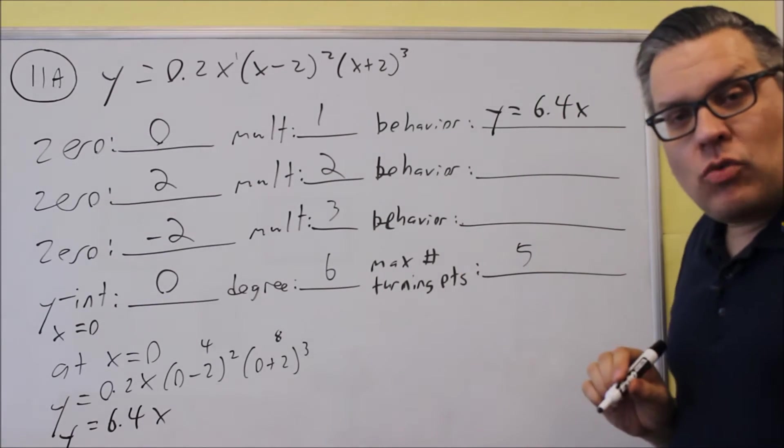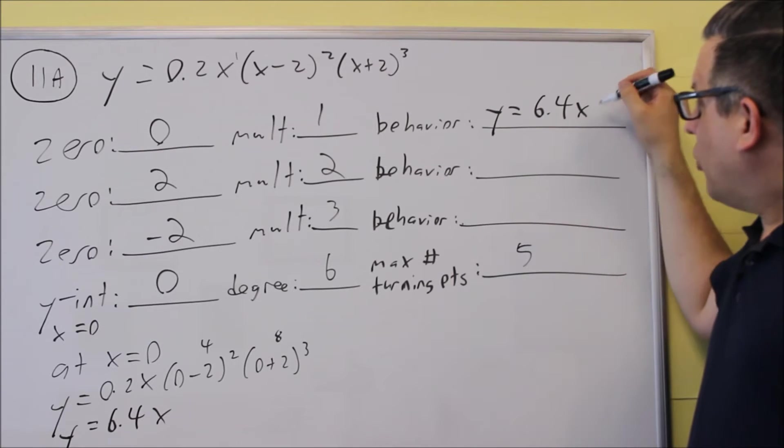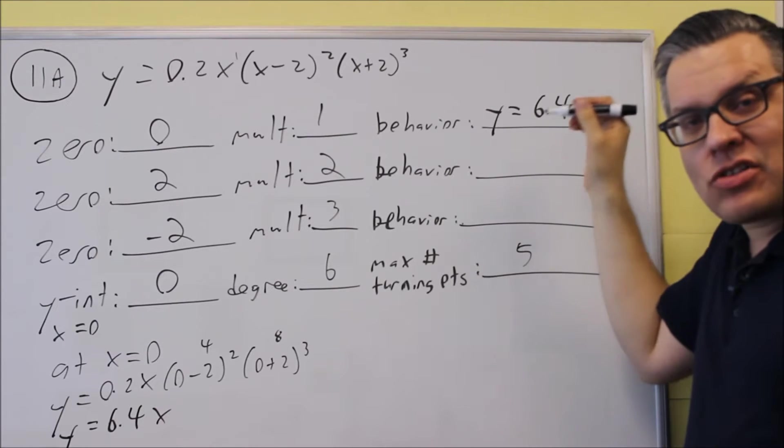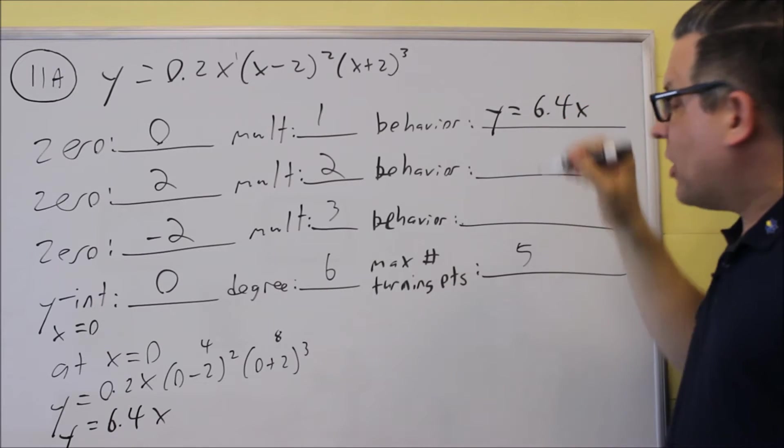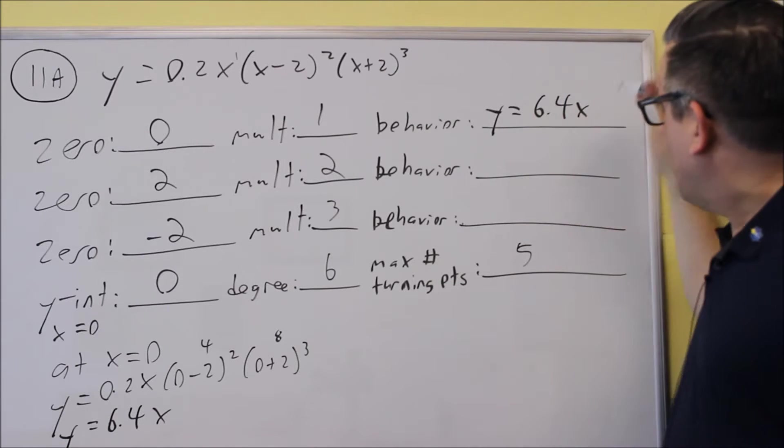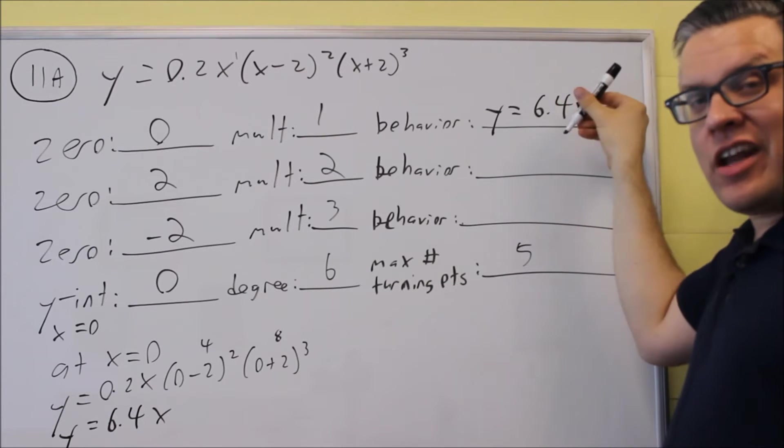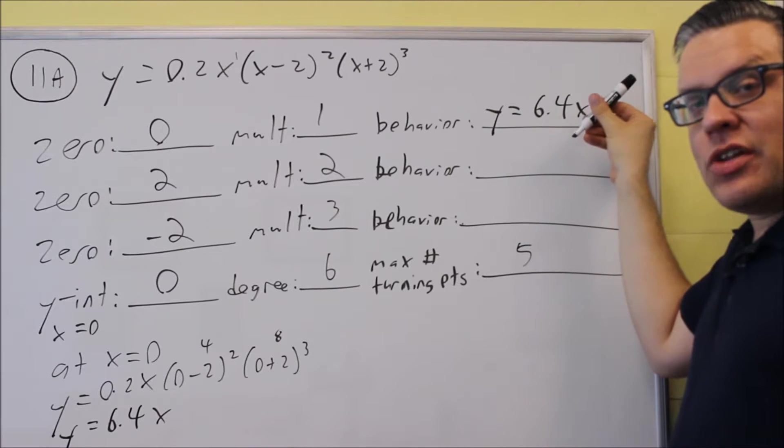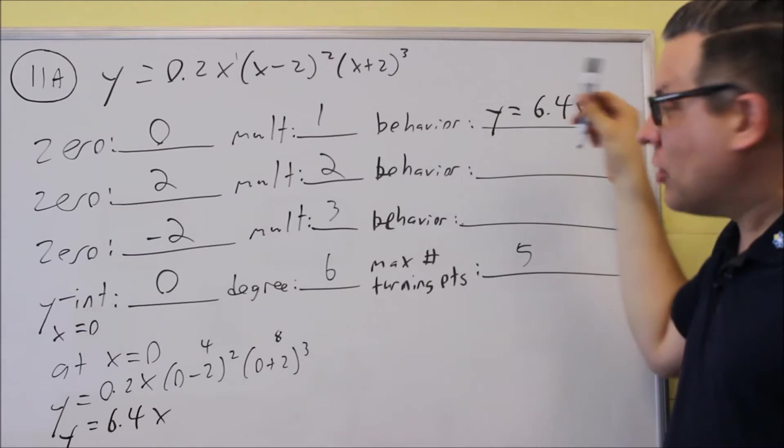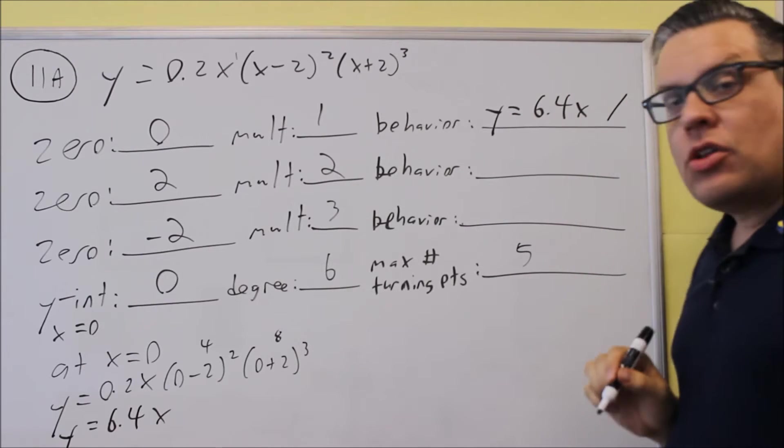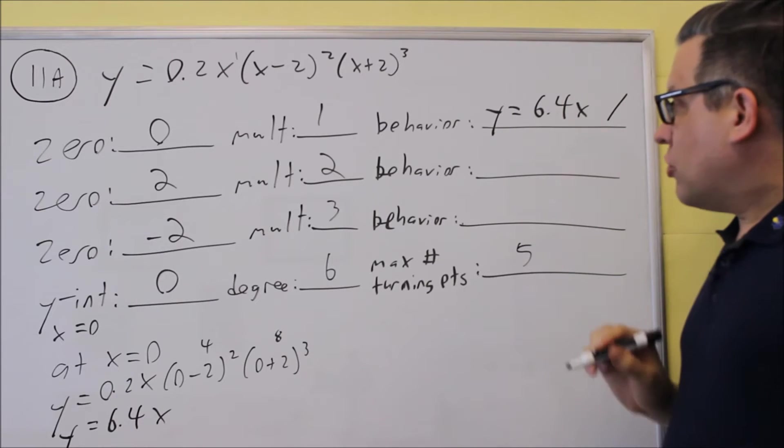Now, 6.4x, what that is, is that's a line with a positive slope. Anytime you have x to the first power, it'll be a line. Because the first number is positive, we know that it's going to be a line slanting to the right. If it was a negative, we would slant it to the left. But this one, we're going to slant it to the right, and that little sketch will look something like that.